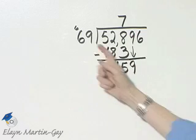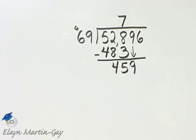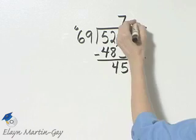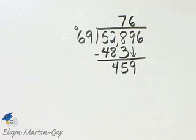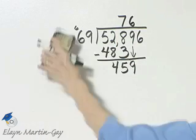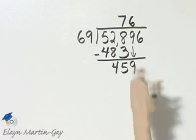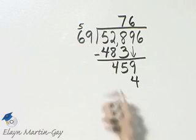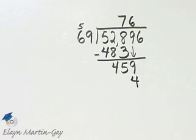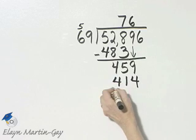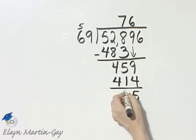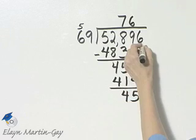Well, I know 7 times 69 is 483, and that would be too much since I only have 459. So let's try 6 times. Now let's multiply: 6 times 69. 6 times 9 is 54, carry the 5. 6 times 6 is 36 plus 5 is 41. Let's subtract. That's 5 and 5 minus 1 is 4.